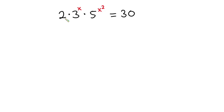Hello everyone. In this video we have this interesting problem: 2 times 3 to the power x times 5 to the power x squared is equal to 30, and we have to find the values of x.